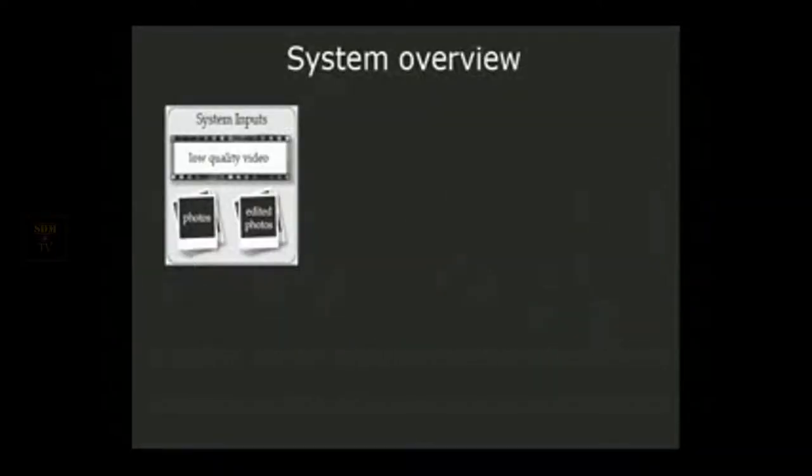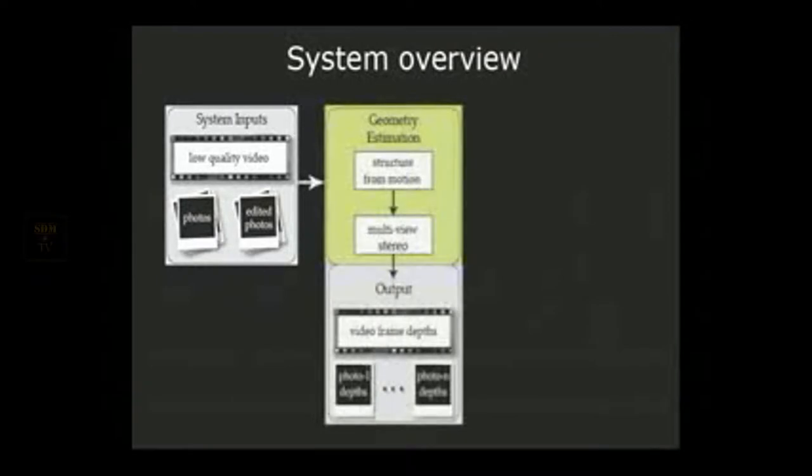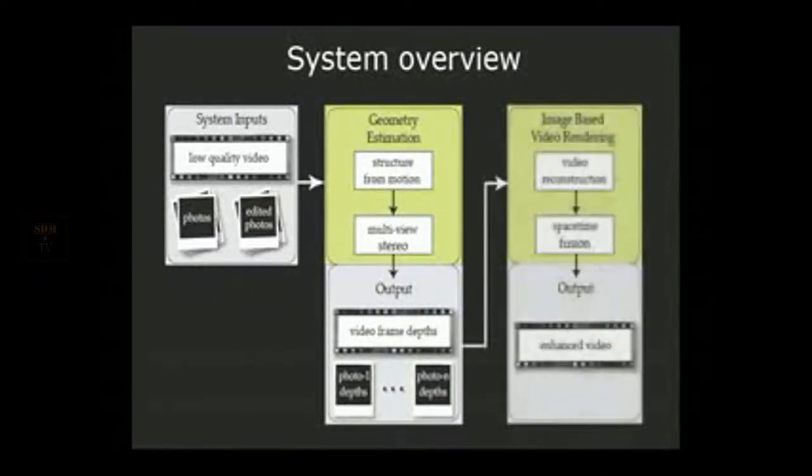To accomplish this using the input video and photographs, we estimate the scene geometry using structure from motion and stereo. Next, our image-based video rendering algorithm constructs an enhanced video using the appearance of the photographs. This spatial appearance is created while still preserving the temporal dynamics of the video such as highlights and dynamic lighting.